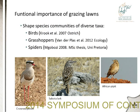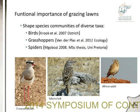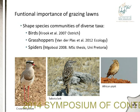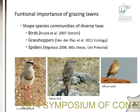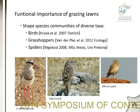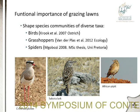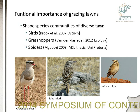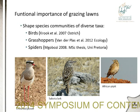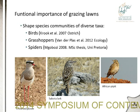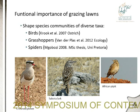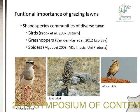Grazing lawns have been studied extensively in the park since Norman started the work. A lot of interesting studies have looked at the functional importance of grazing lawns — not just for herbivores like white rhino, warthog, and wildebeest, but also for other taxonomic groups. Studies on birds, grasshoppers, and spiders all indicate that grazing lawns are used by a certain specialist community of species. For example, three bird species at the bottom seem to be grazing lawn specialists.